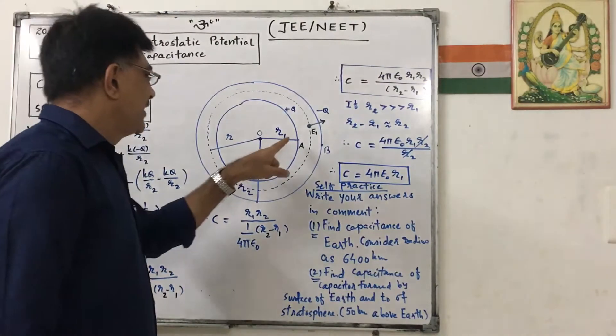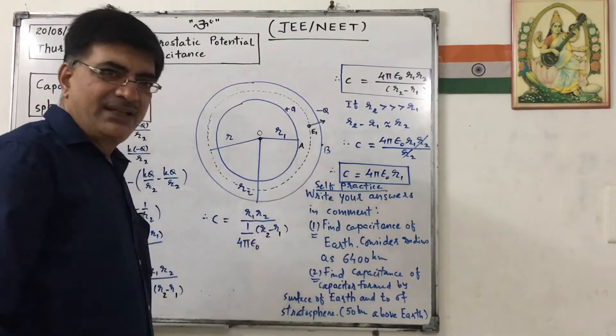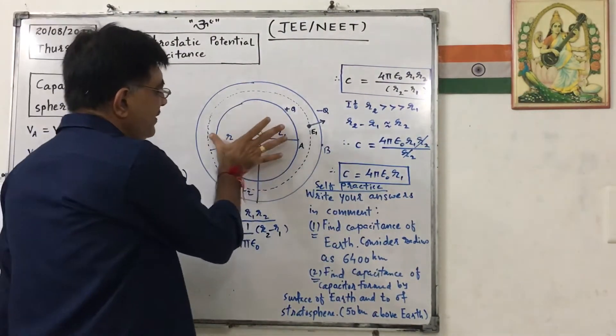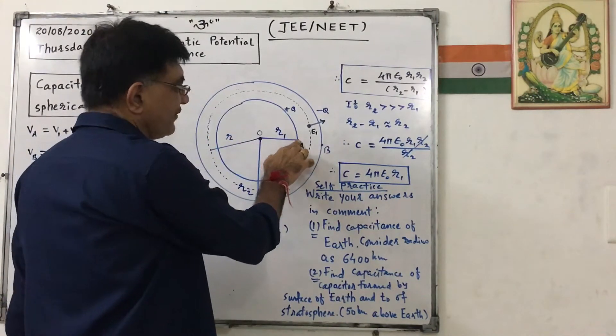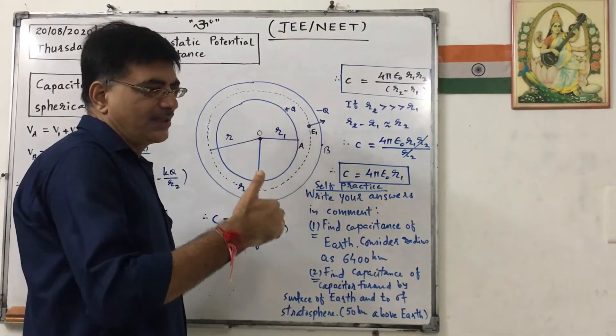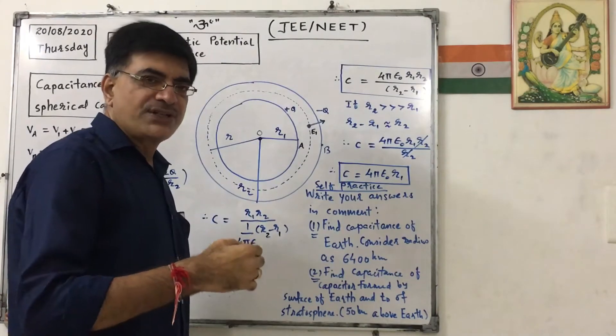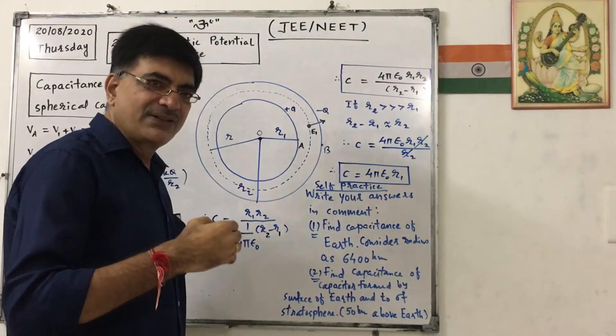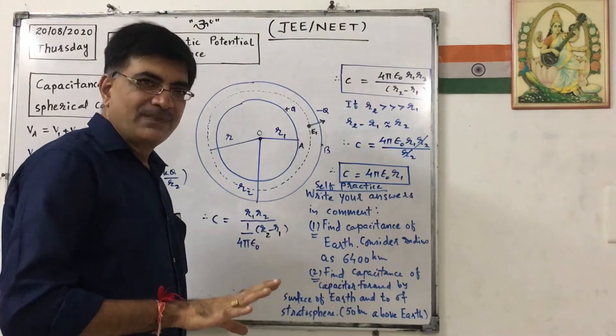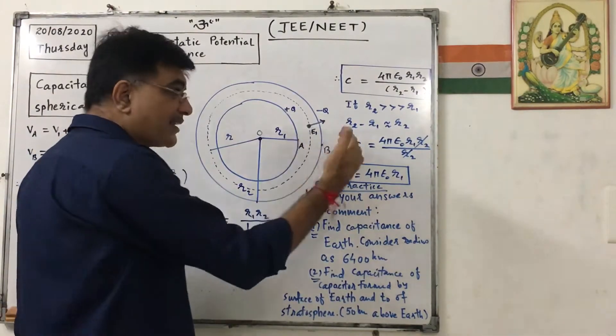Now, if you want to find out potential at point A, for this shell, it is on the surface and we know that at the point on the surface, potential is KQ by R, where R is the radius of that shell. For this shell, it is inside point.